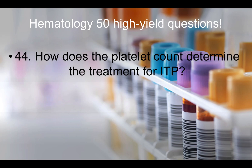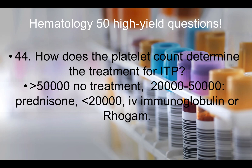Question forty-four: How does the platelet count determine treatment for ITP? Greater than 50,000 — no treatment needed. 20,000 to 50,000 — use prednisone. Less than 20,000 — IV immunoglobulin or Rho-GAM. Knowing these thresholds will help you determine the right answer.